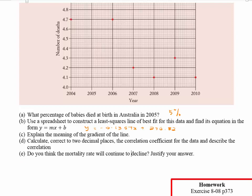Part C says explain the meaning of the gradient of the line. The gradient in this case is the rate at which the deaths are decreasing each year — or the rate at which the mortality rate is decreasing each year. I'll leave you to write that down.